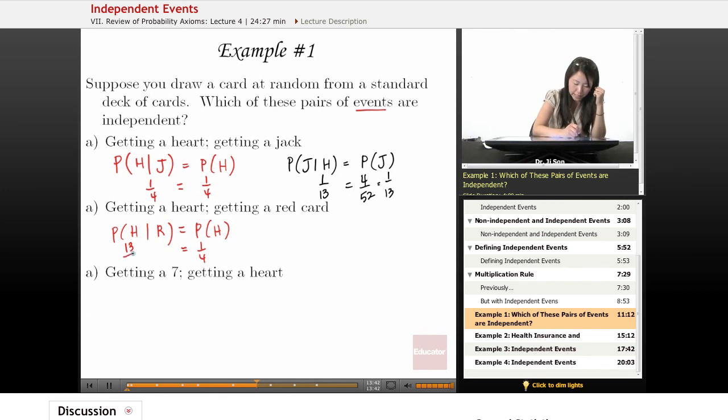So 13 out of 26 are hearts, right? And that's really half of those cards are hearts if you know that it's already a red card. So 1 half does not equal 1 fourth. So I would say these are not independent.